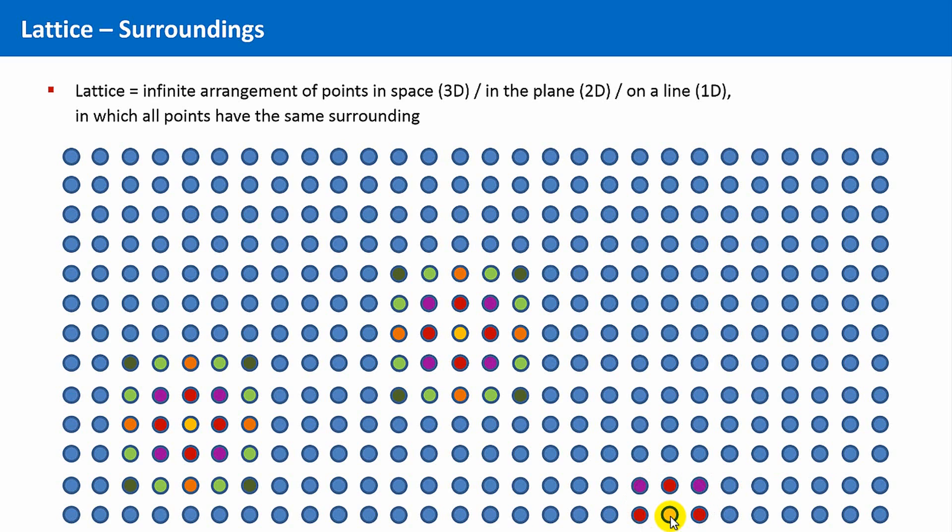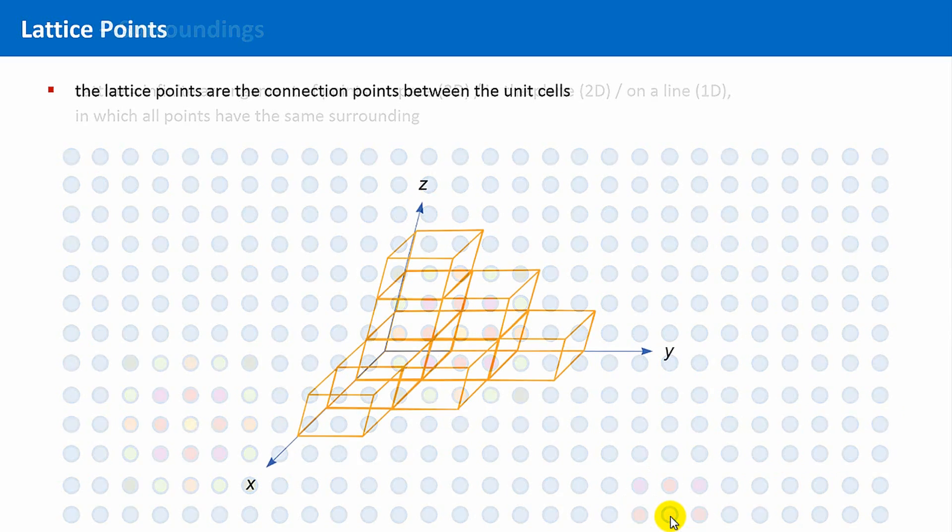Of course, in reality, crystals have borders, and this leads to different physical or chemical properties at the surface compared to the bulk phase. Now, we need the connection to our crystal structure.